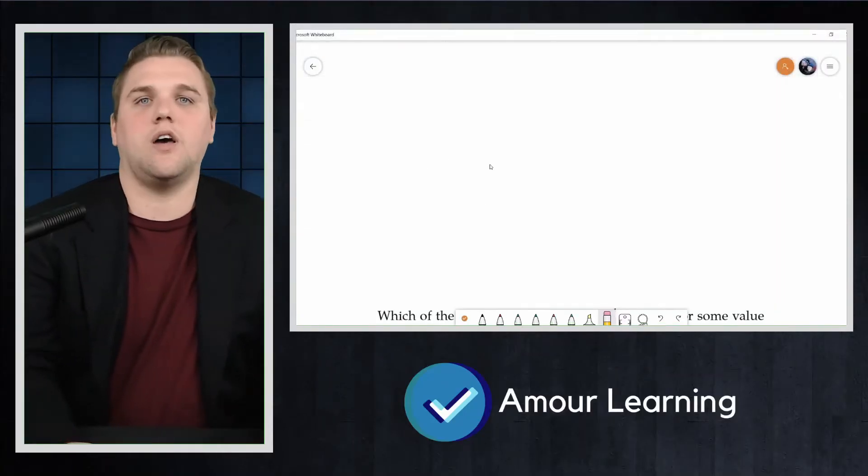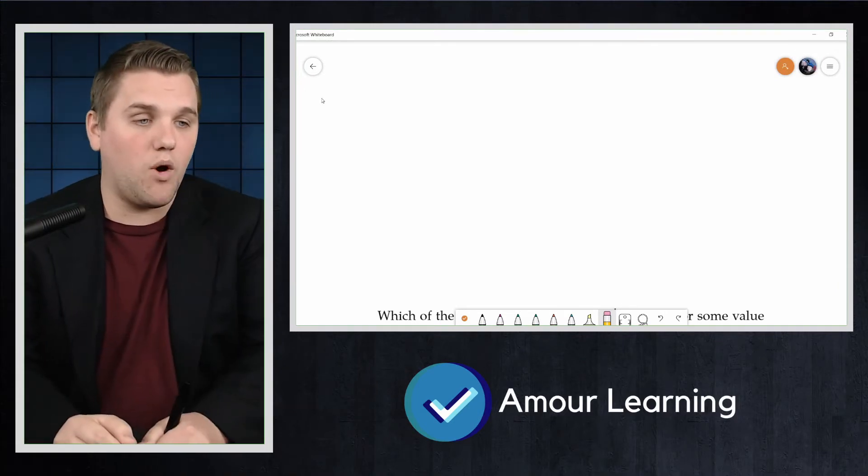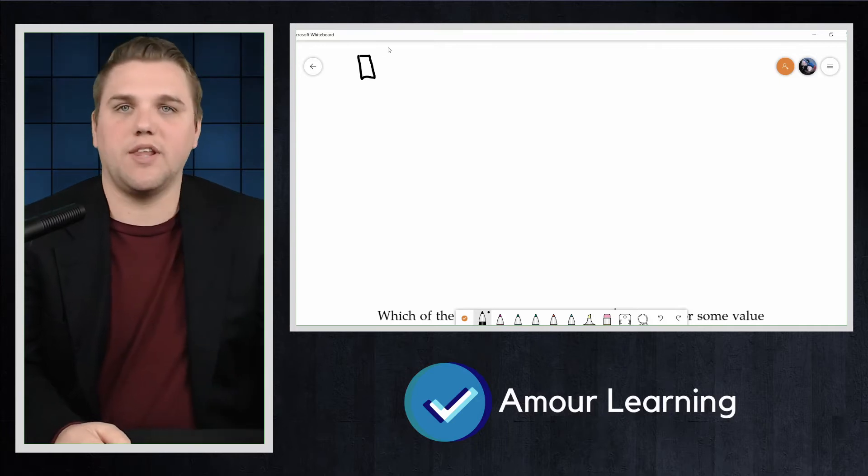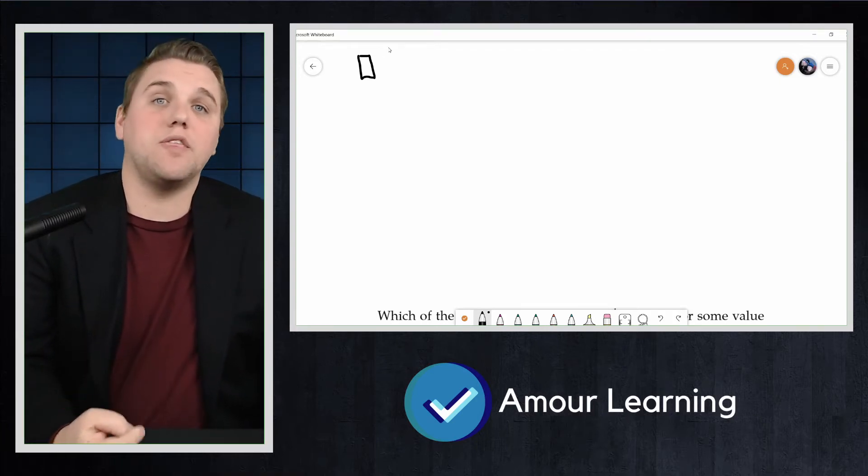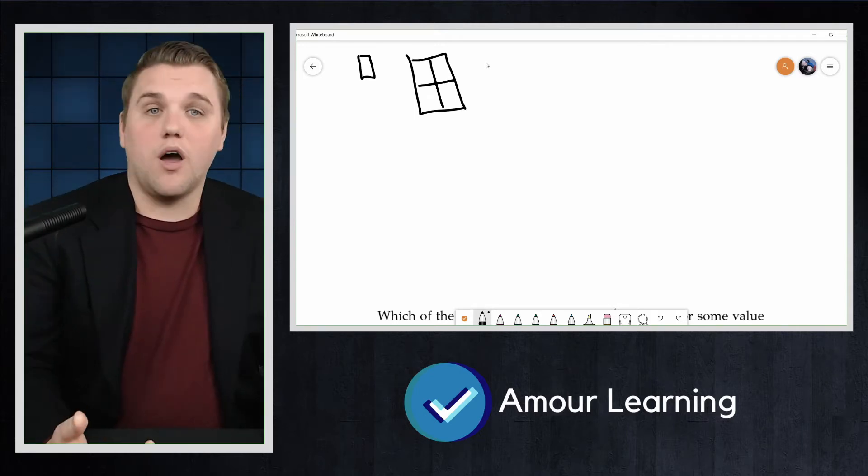The first term in this sequence, and let me make some space on my whiteboard here, the first term in our sequence will be the number of squares on a 1x1 chessboard, which looks something like that. The second term will be the number of squares on a 2x2 chessboard, and so on.